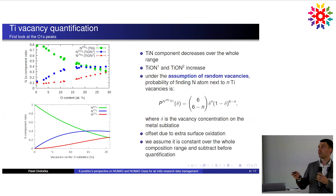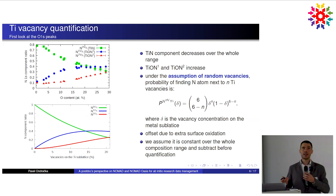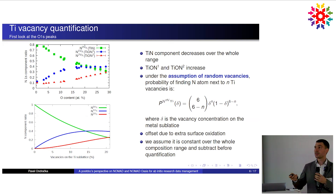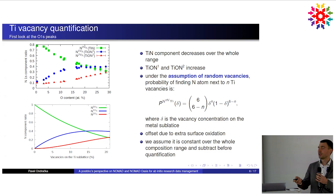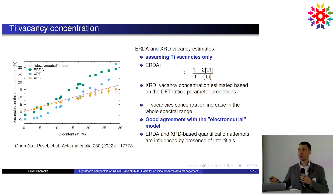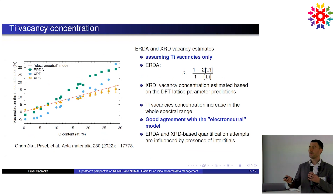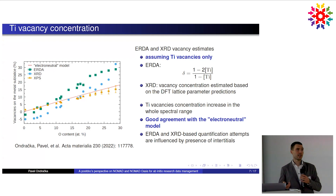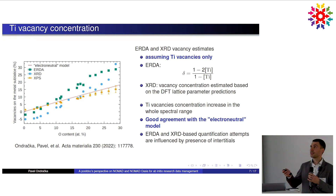The agreement with experiment is quite good, except for a slight offset, because the films were exposed to air and there is some additional surface oxidation overlapping with the vacancy-related components. With a few approximations to correct for this offset, you can extract the vacancy content on the metal sublattice directly from the ratio of the three peaks — shown in gold. The red line represents the most stable electroneutral model scenario. Other quantification methods based on lattice parameter or stoichiometry didn't work as well, because the films also have interstitials that can't be distinguished from vacancies in XRD or stoichiometry analysis. In this regard, XPS performed best.